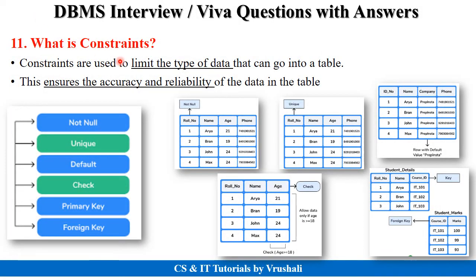The next important question is: what exactly are constraints? Constraints mean limitations or restrictions on the type of data that will be stored in a table. There are total six types of constraints: NOT NULL, unique constraints, default constraints, check constraints, and primary key and foreign key constraints. NOT NULL is generally used on primary key — a primary key value can never be null. Unique constraints mean a column like roll number contains unique values. Default constraints apply when a value like company name or city is the same for every employee. Check constraints apply on a particular column like age, with a condition like age >= 18, so only that information is stored in the table. Constraints ensure accuracy and reliability of data in the table.